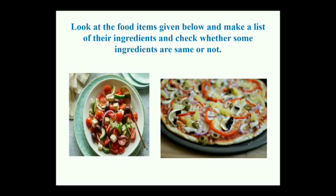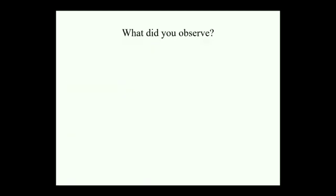Moving forward, we look at two different food items again. Can you identify these food items? Can you make a table similar to the one we made before for roti, noodles and burgers? You can pause the video and make a list of the ingredient table and come back to the video. After making the table, what did you observe? Are some ingredients the same? Maybe yes — typically the vegetables, cheese and various sauces may be the same.